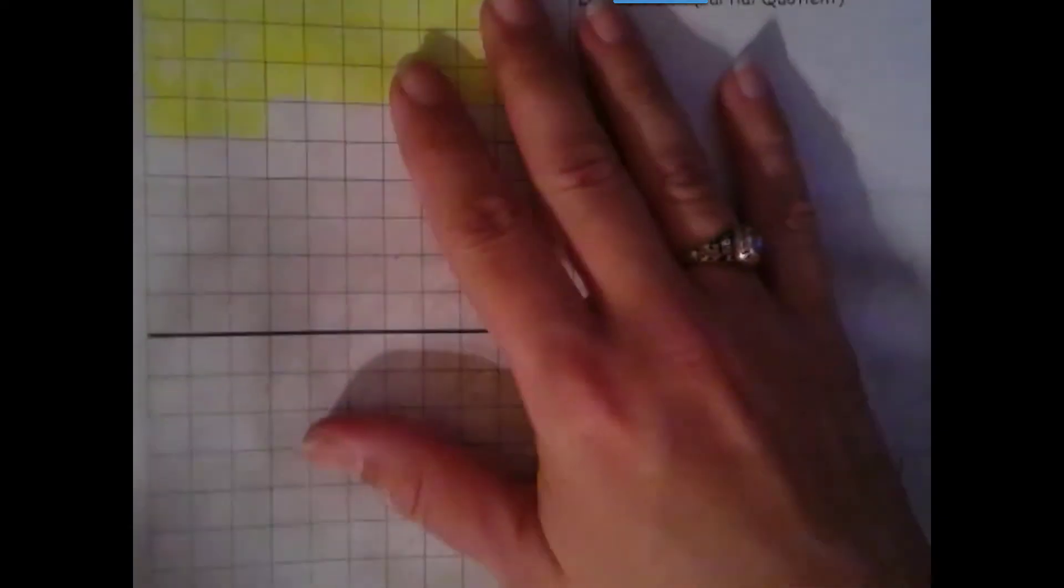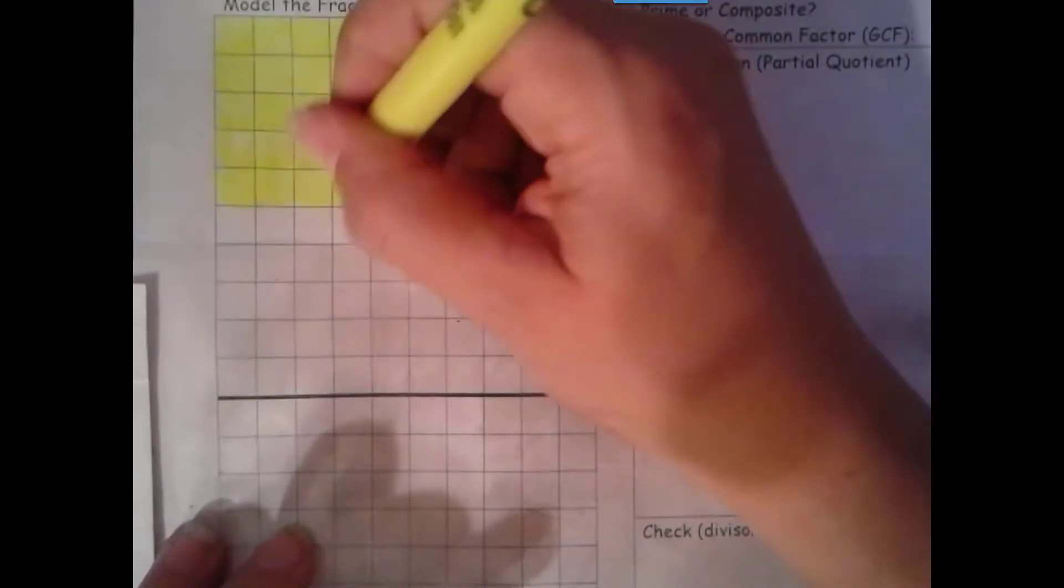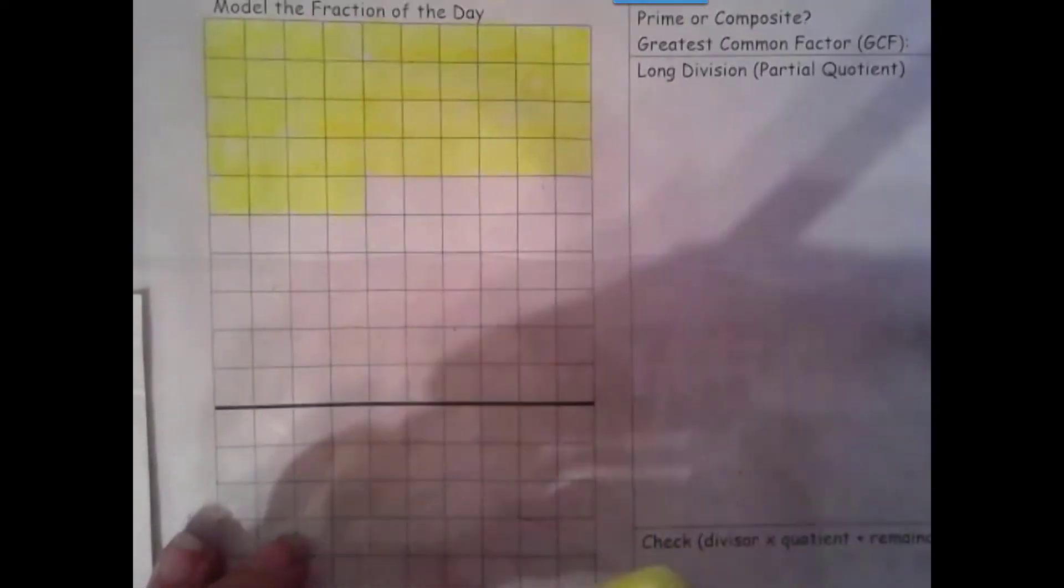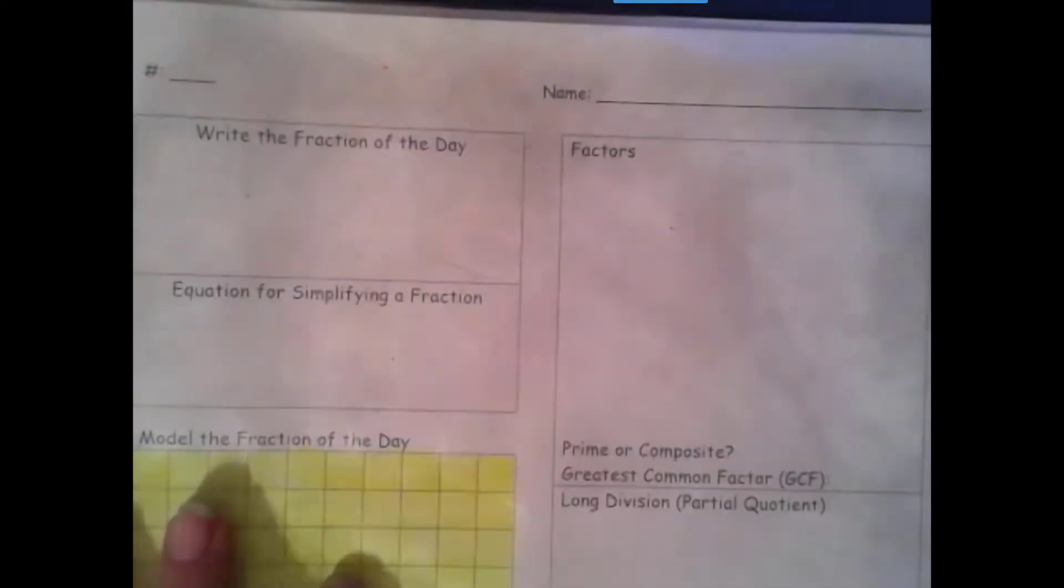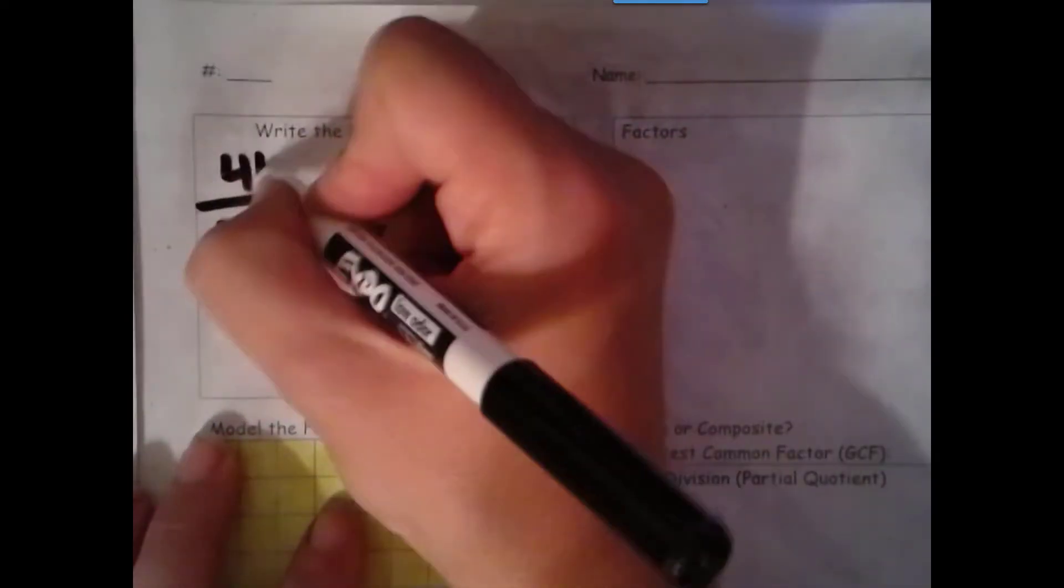Welcome to day 44 of our school year. Let's get that filled in. So our denominator is 180, that's the total amount of school days, and we are on day 44.